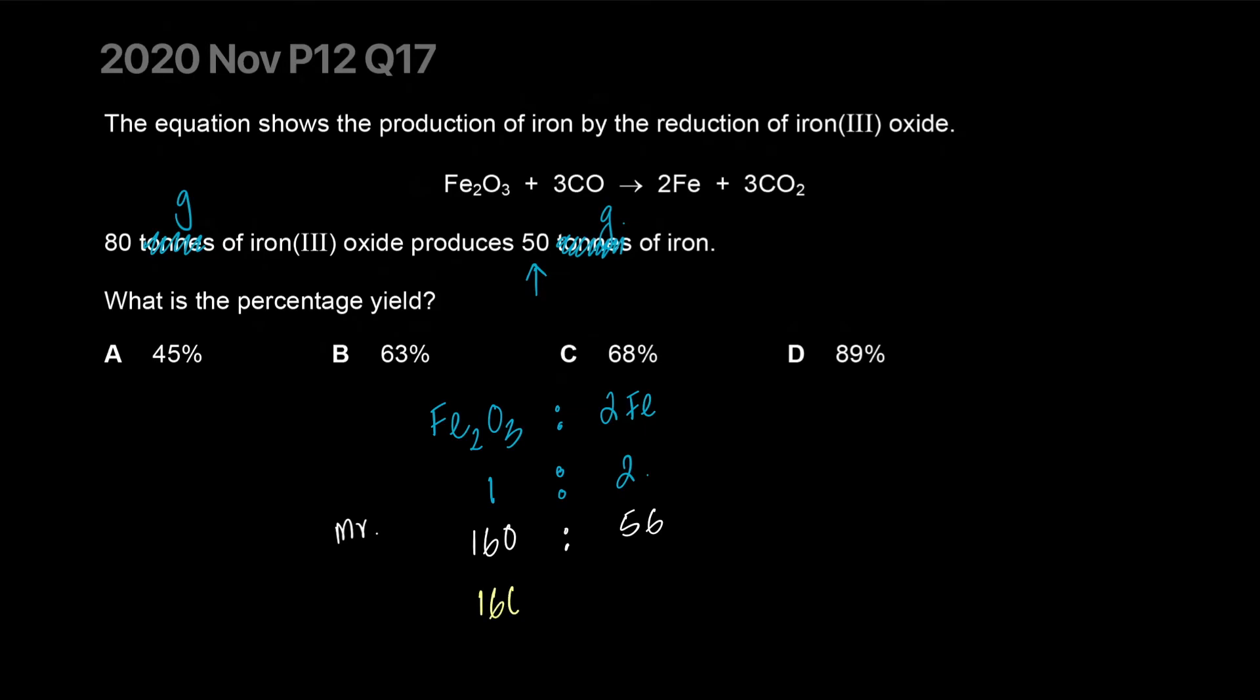So 160 MR gives me iron's equivalent of MR, 112. So that would mean if I have 160 grams, I'll get 112 grams. I actually have 80 to begin with, so it should give me half of it, which is 56. So it should give me 56. That's what I was expecting. But I actually got 50, so the math is 50 over 56 times 100. I'm going to guess that's very close to 89. Yeah, correct answer is 89, D.